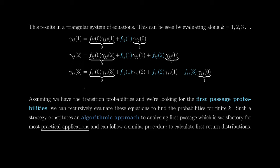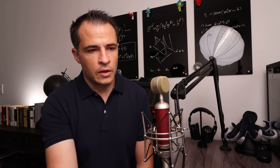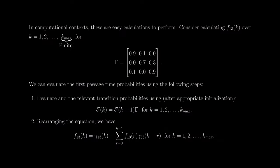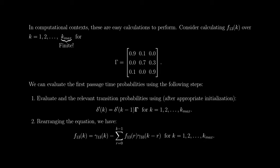Such a strategy constitutes an algorithmic approach to analyzing first passage, which is satisfactory for most practical applications. We can also follow a similar procedure to calculate first-return probabilities. In computational contexts, the calculations are straightforward using this approach. Let's consider calculating first-passage probabilities for moving from state one to three over a finite transition horizon k running from one up to some chosen k_max, for a three-state Markov chain with a given transition matrix.